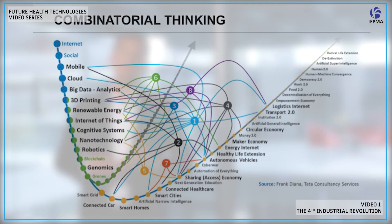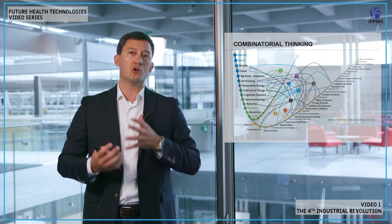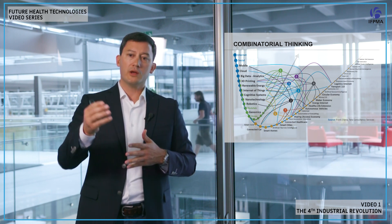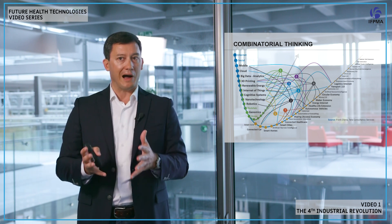If you look at the exponential curve on the top left, you'll see the blue technologies — very mature technologies like internet, social media, mobile technology, 4G to 5G, cloud, big data, and so on — applied across a large range of sectors including healthcare. In green are the frontier technologies: 3D printing, renewable energy, internet of things, cognitive computing, nanotechnology, robotics, genomics, and drones. These frontier technologies are coming at a fast pace and starting to merge and blur with many other technologies and combine together. It looks like a spaghetti arrangement because you can combine them in any way you want, making them very interesting and powerful in their applications.